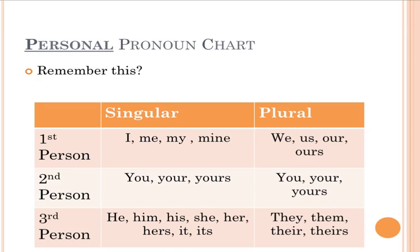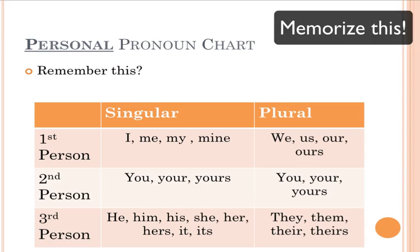Let's review for a second. Do we remember this chart? This is our personal pronoun chart — these are the 26 pronouns in the subjective case, objective case, or possessive pronouns that are used to replace specific people, nouns, individuals, and objects. We have to have a specific something in mind in order to replace them with a personal pronoun. We can't say 'he' and not know who that 'he' is.